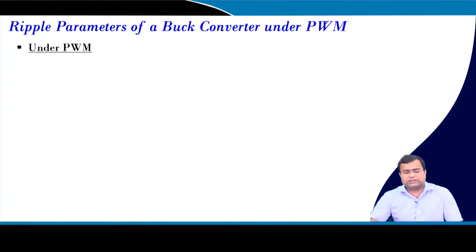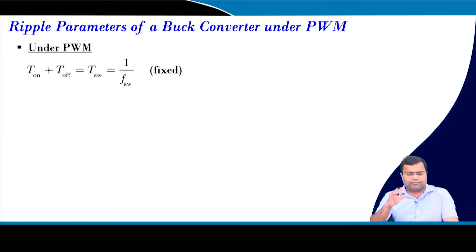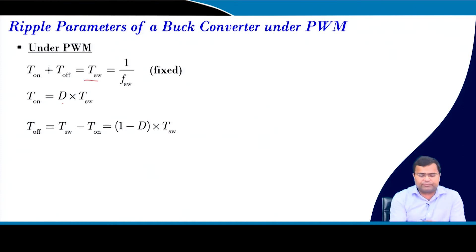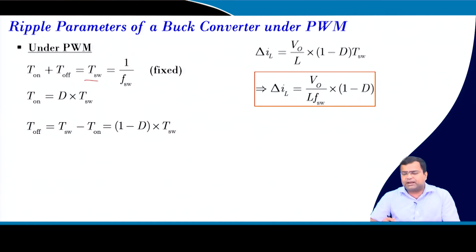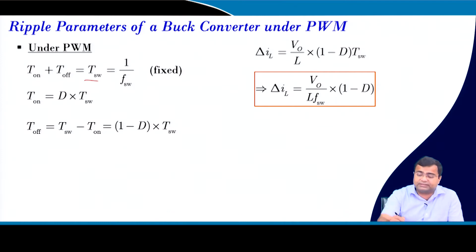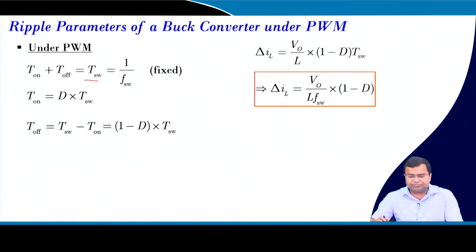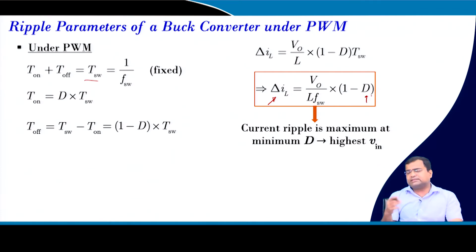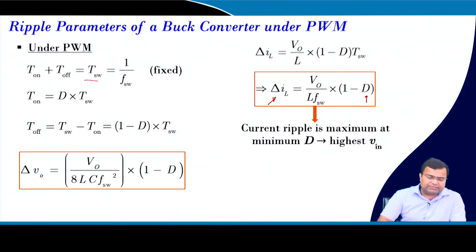Under pulse width modulation, the on-time and off-time sum is fixed as the switching period, where on-time is D times the period and off-time is (1−D) times the period. We can write the ripple parameters in terms of these quantities for a voltage regulator where output voltage is fixed. The ripple is maximum when D is minimum, meaning the input voltage is at its maximum.